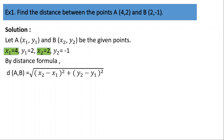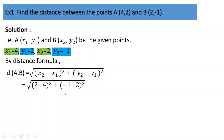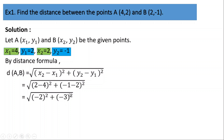Substituting the values: (2 minus 4) squared plus (-1 minus 2) squared, all under the square root. What is 2 minus 4? It is -2. So it becomes (-2) squared plus (-3) squared. For -1 minus 2, since there are two negative signs the operation becomes addition, giving 3, and the sign is negative, so we get (-3).